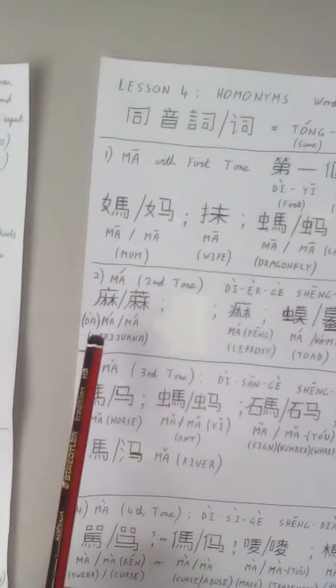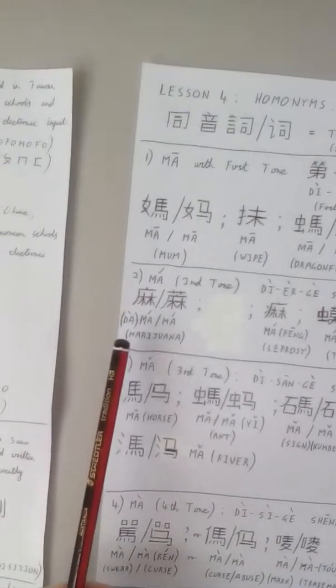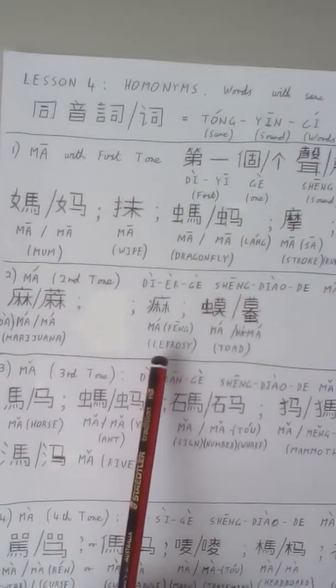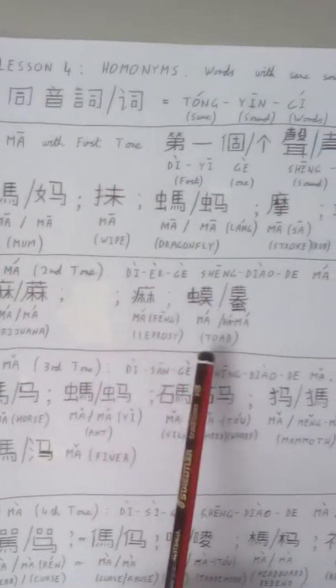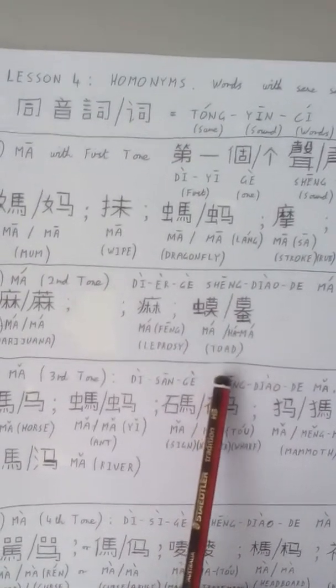马, the second tone, 马. 麻 is marijuana. 麻疯, this one here, is leprosy. 蟆蟆 is a toad.